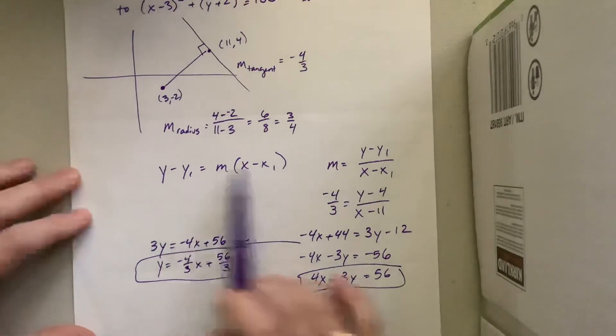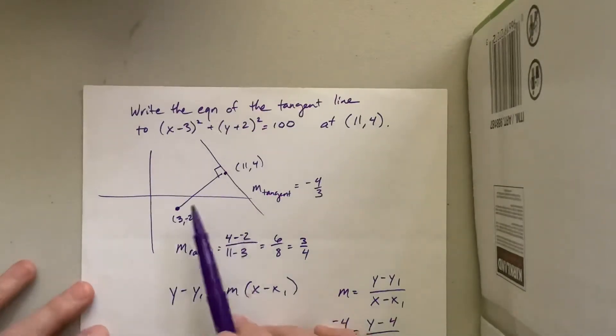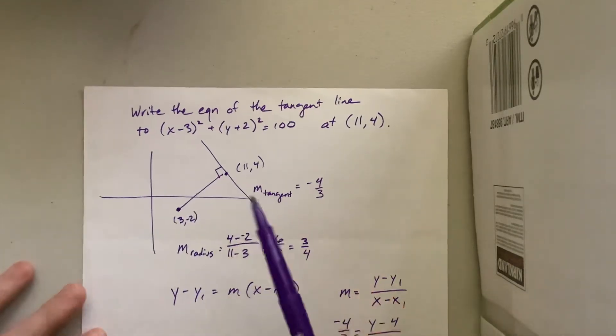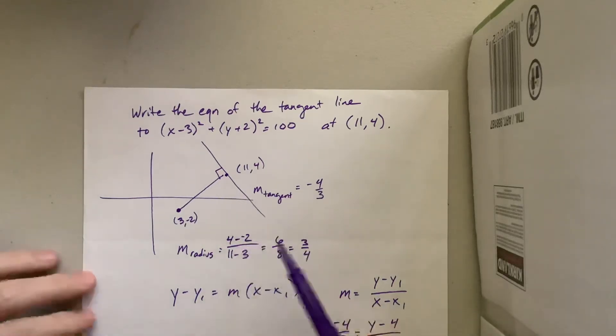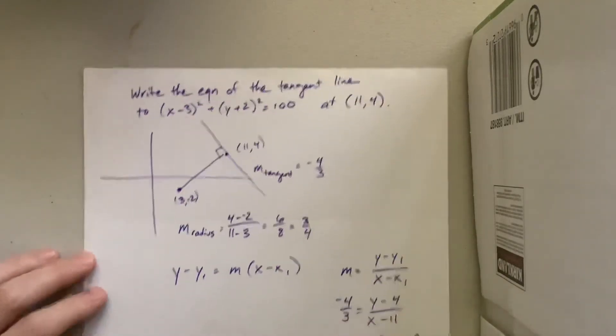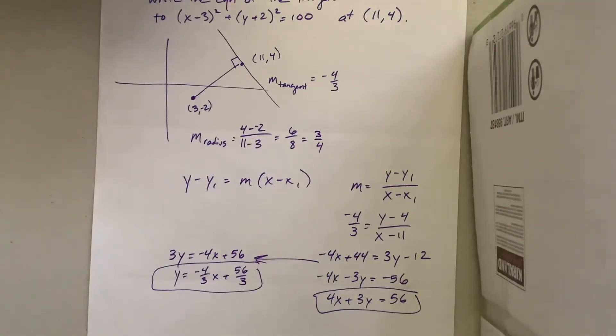But basically, yeah, I mean, by all means, use that if you like it. But that's what we need to do. You have to find the slope of the radius. Then that tells you the slope of the tangent line. And once you have a point and a slope, you're back in Algebra 1. Okay, so good luck. Go try the problem on the quizzes. Hopefully that made sense.